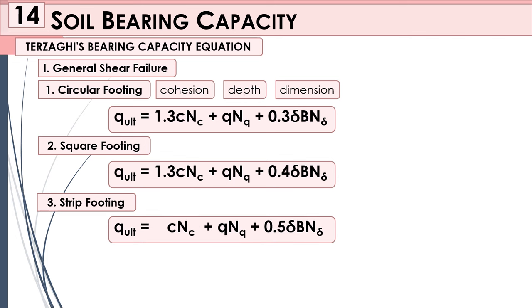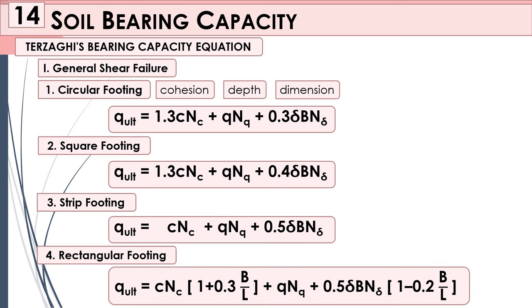For your strip footing you have: cNc + qNq + 0.5γBNγ. And for your rectangular footing you have: cNc(1 + 0.3B/L) + qNq + 0.5γBNγ(1 −